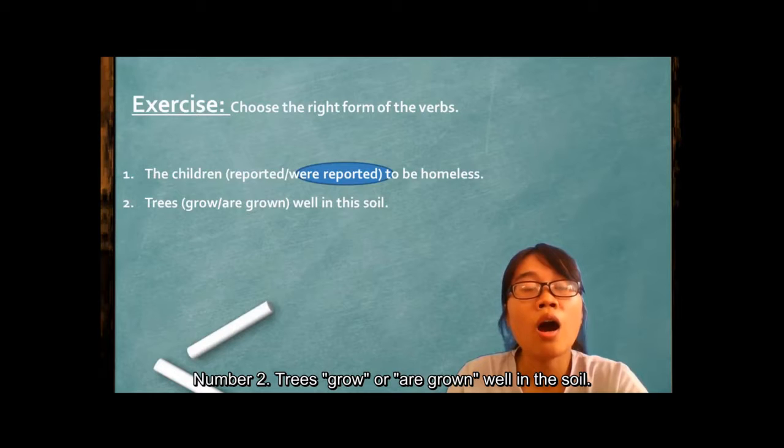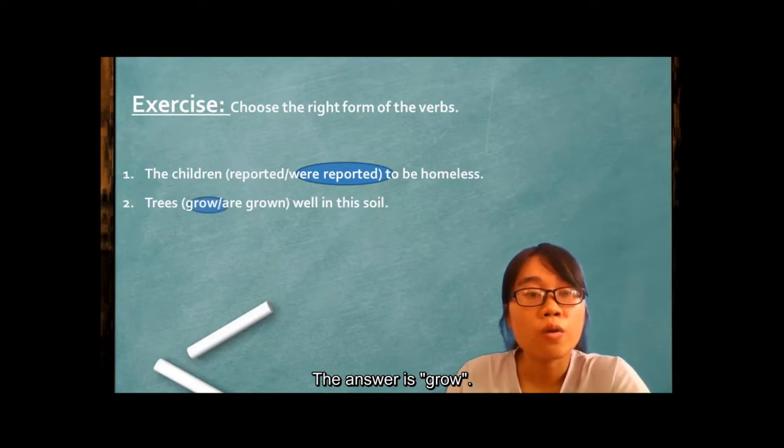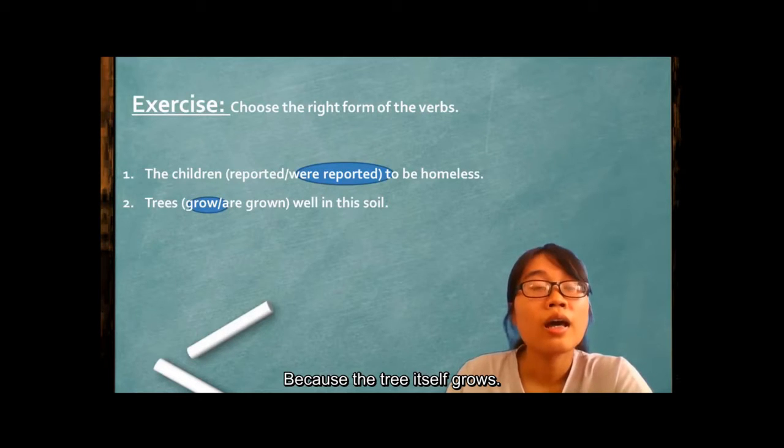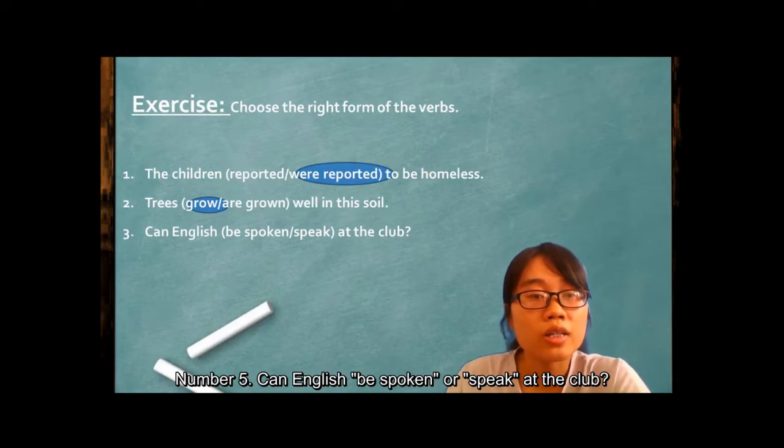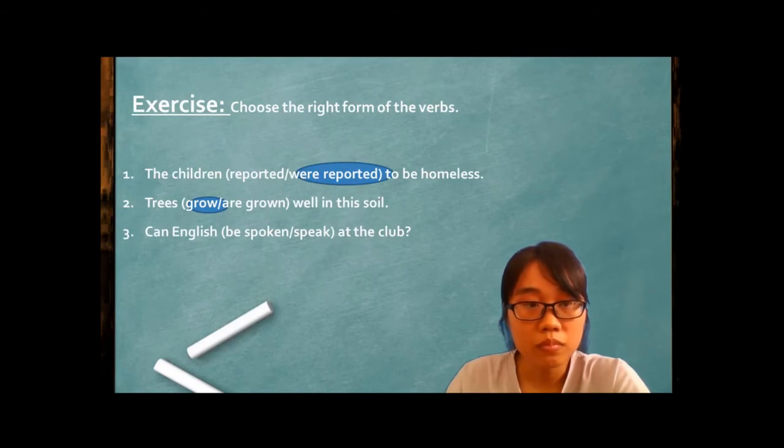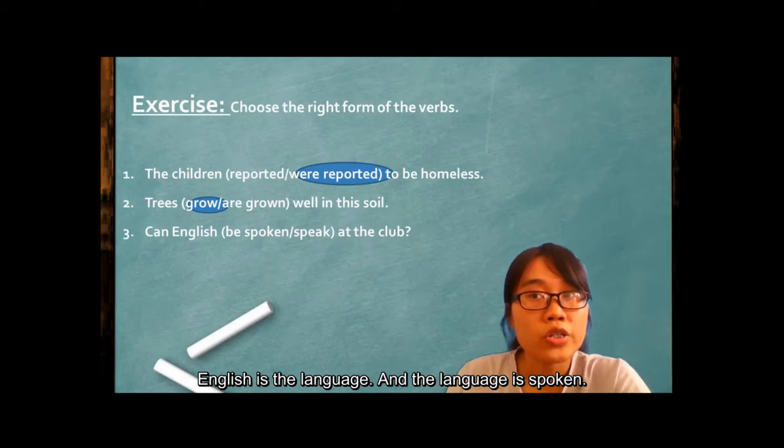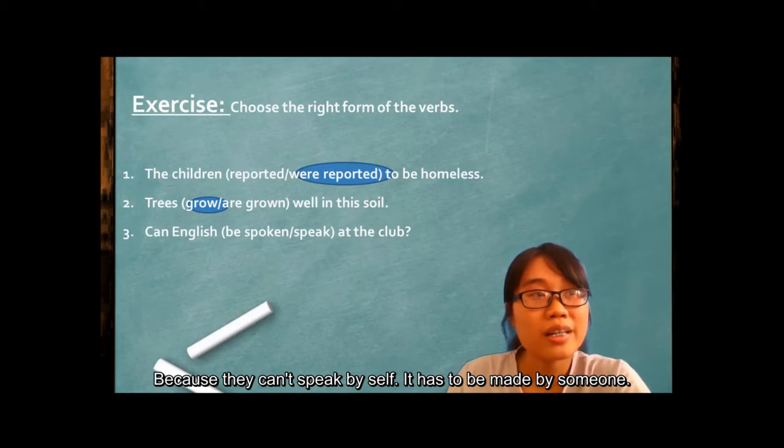Number two, trees grow or are grown well in this soil. The answer is grow because the trees themselves grow. Number three, can English be spoken or speak at the club? The answer is be spoken because English is a language and cannot speak by itself.